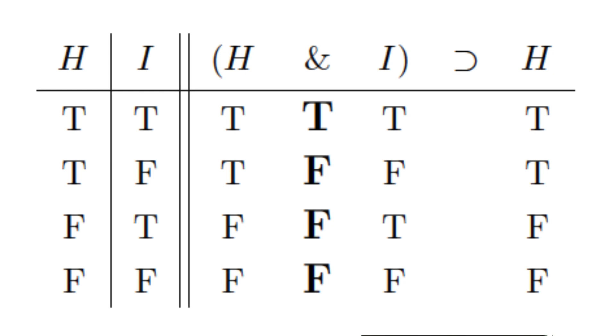Next we need to fill in the final column under the conditional. The conditional is the main connective of the sentence. So, the whole sentence has the form, if A, then B. To fill the final column, we just need to look at the characteristic truth table for the conditional.